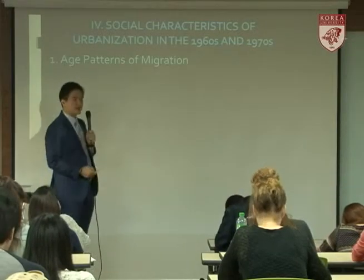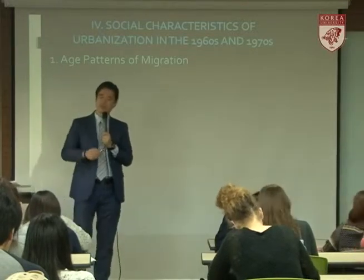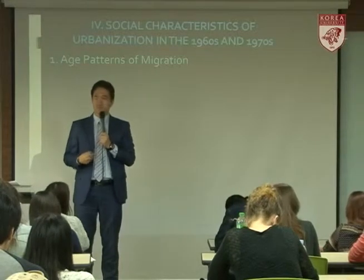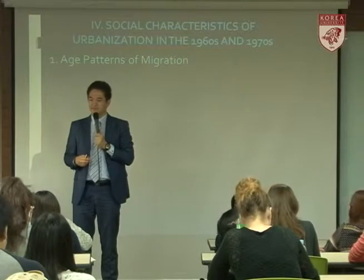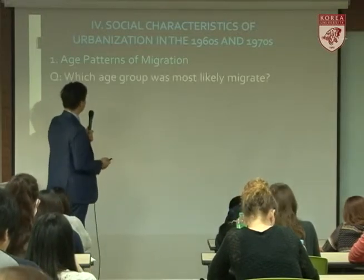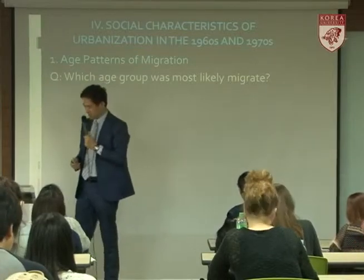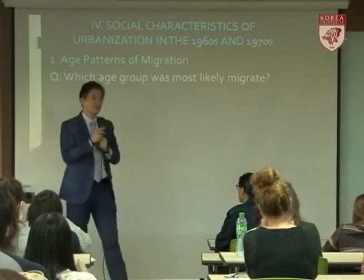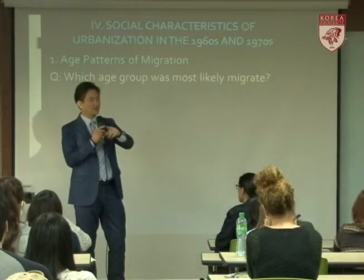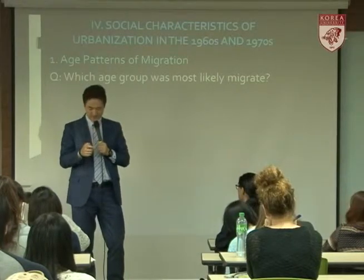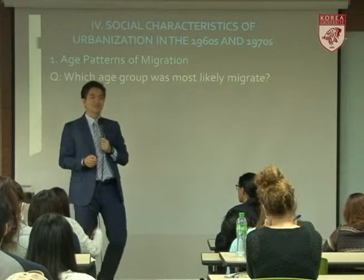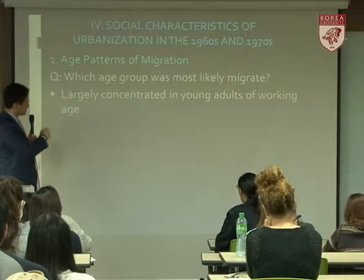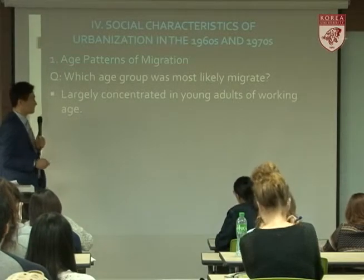First is age patterns of migration. The question is: when there is rapid urbanization, is it usually old people who move, or young people? Young people. Which age group is most likely to migrate? The age groups are 1-9, 10-19, 20-29, 30-39, and so on. It's largely concentrated in young adults of working age — even younger than the 20s.